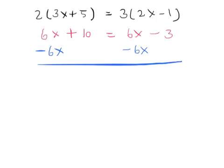So when I do that, I get 10 equals negative 3, since the 6x adds with the negative 6x and gives 0, and same is the case on the other side too.